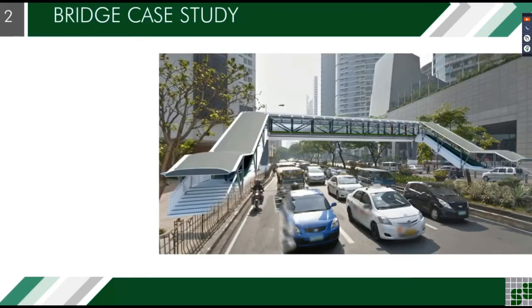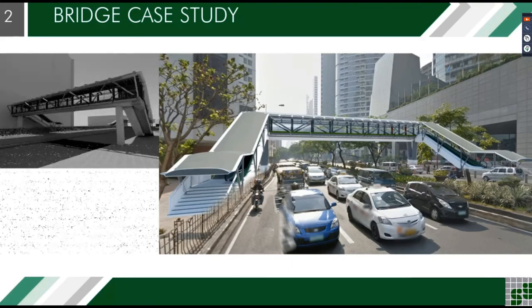For our case study, this is the bridge located along Makati. It is an approximately 30-meter span Vierendeel truss made of steel. The main frame structural elements are hollow rectangular steel profiles with varying thickness. The bridge deck is made of composite metal deck attached to the transverse end beams, and the truss is supported by cantilever columns attached to the mat foundation.